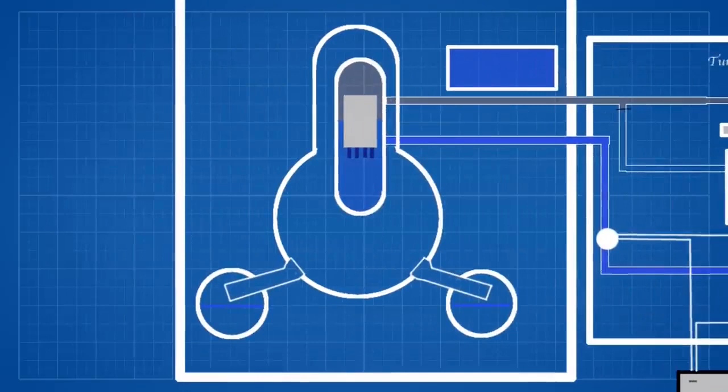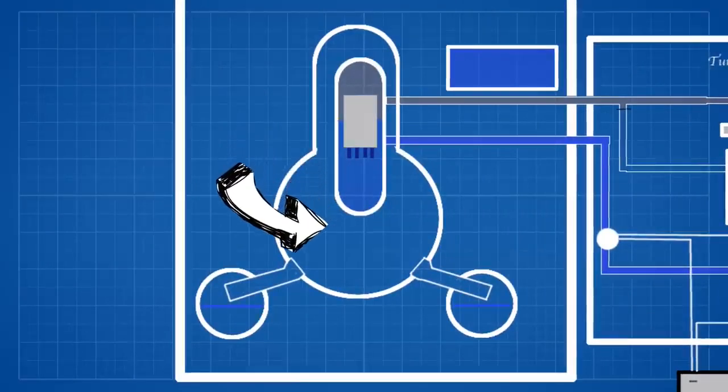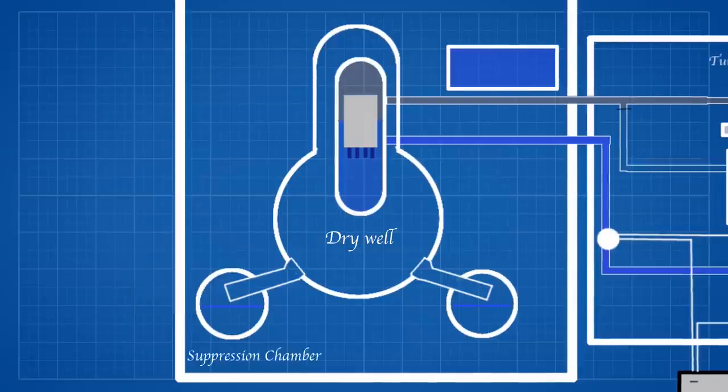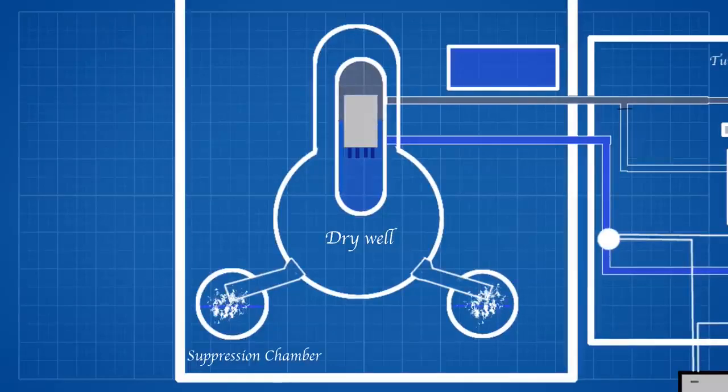The PCV has two major compartments. The reactor vessel is located in the dry well. The DW is connected to a second compartment, the suppression chamber, which holds a large amount of water and enough space to suppress pressure increases. The water within the suppression chamber can be used to scrub radioisotopes from any gases released within the containment vessel.